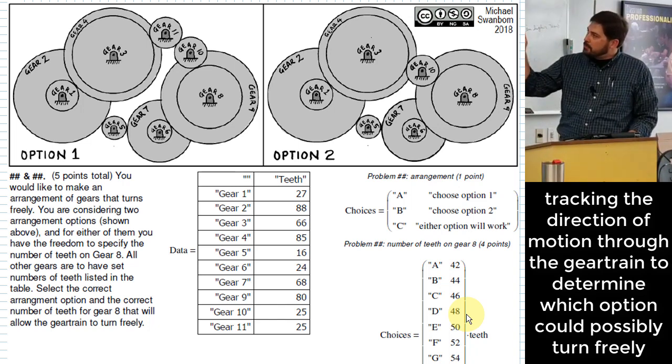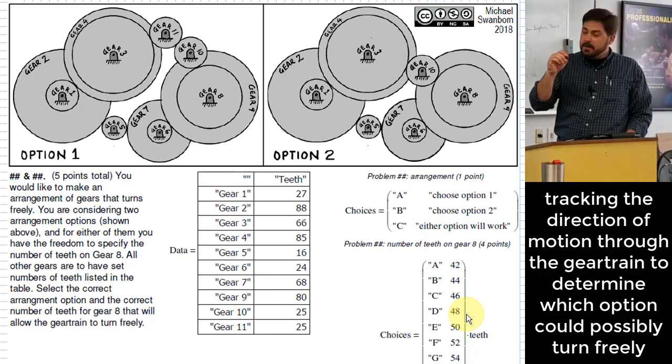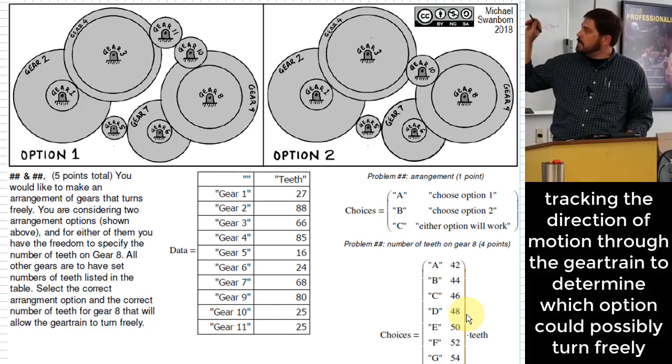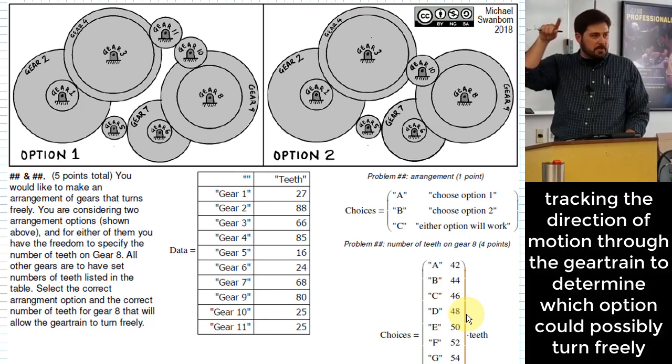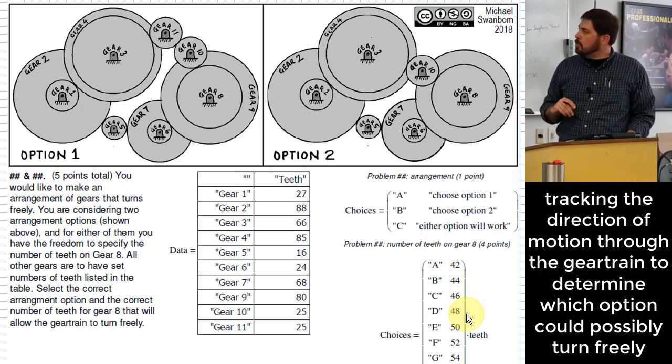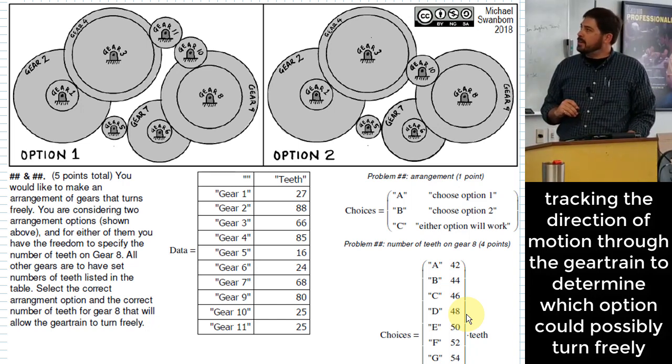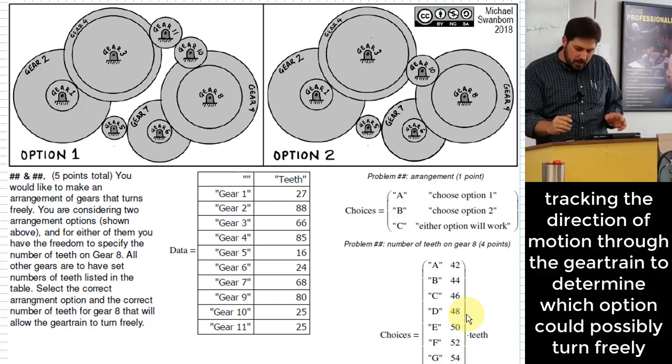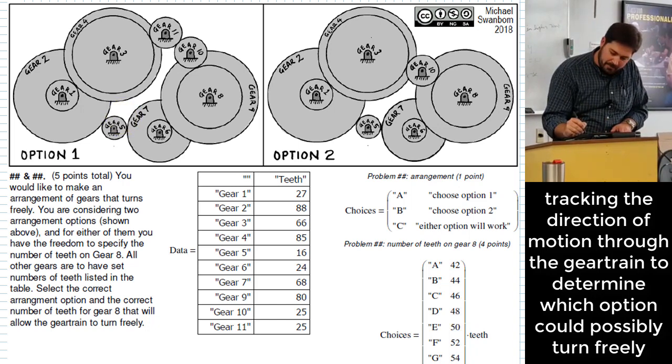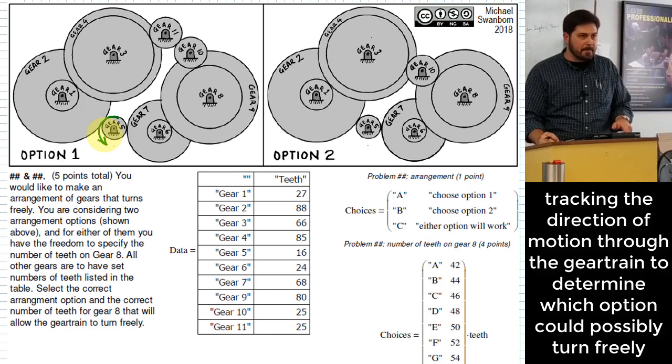And so the first task is we got to figure out which of the two even has a possibility that it could turn freely. And once you pick that one, we have to pick a number of teeth for gear number eight for whichever option we choose so that the ratio is proper no matter which direction we go through the gear train. So let's actually start with the question of should it be option one or should it be option two. And what I suggest for this is that we kind of pick a location in the gear train to start and then sort of pick a location in the gear train to end and trace it through from both directions from beginning to end. Let's imagine we're taking gear number five right here and we're thinking about trying to turn it counterclockwise.